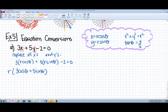I can factor out the r from 3 cosine theta plus 5 sine theta, then move the 2 over to the other side. So I can divide everything and get r equals 2 over 3 cosine theta plus 5 sine theta.